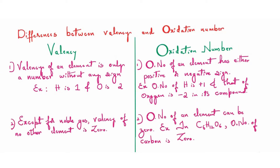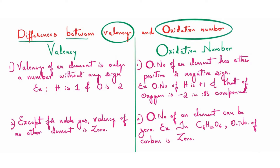Hello students. In today's class we are going to learn the differences between valency and oxidation number. The first difference is that valency of an element is only a number without any sign. For example, hydrogen always has valency one, and similarly oxygen always has valency two — we know that oxygen is always a divalent species.